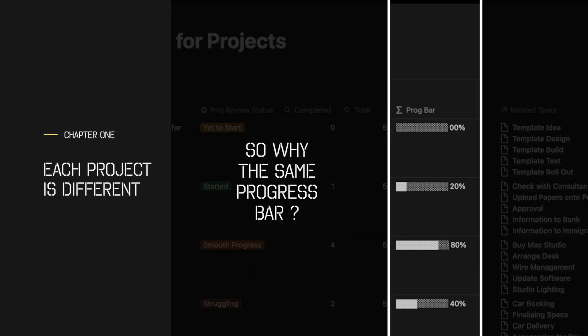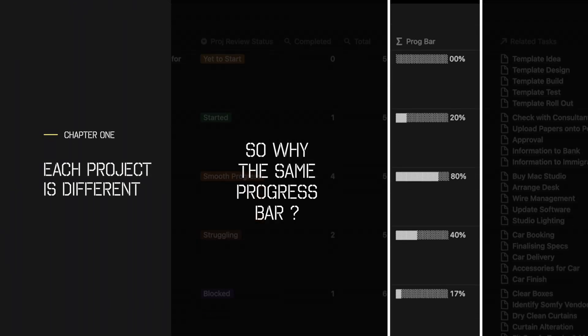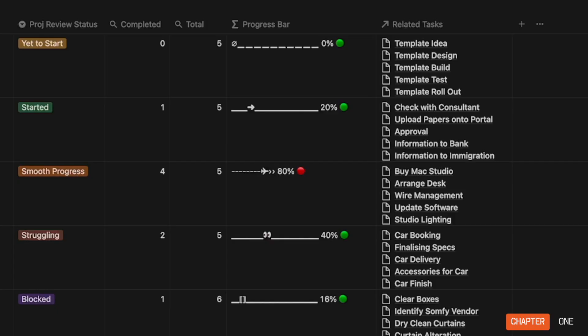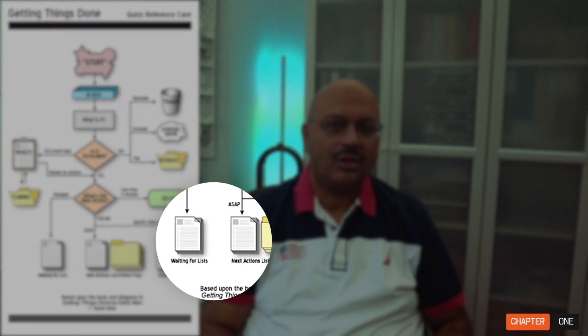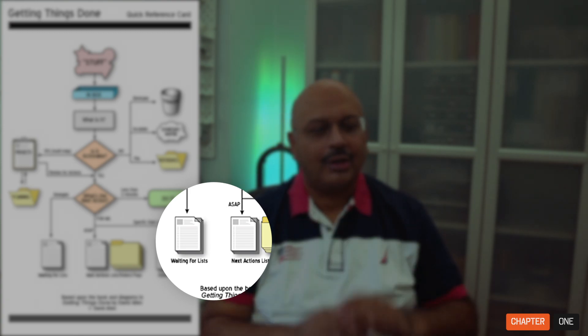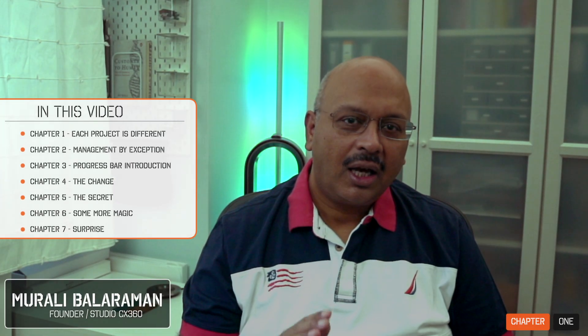Stop looking at progress bars only for tracking percentage completion of your tasks. What may look like a normal innocent progress bar may have some hidden magical facts about them. Most people have between 10 and 100 current projects personally or professionally. Projects could have a definitive next action, or waiting for, or past — so looking at a definitive progress bar type for tracking percentage completion is not the answer.